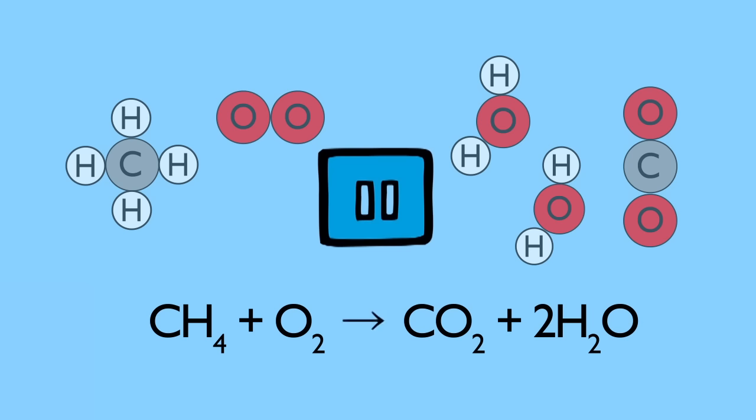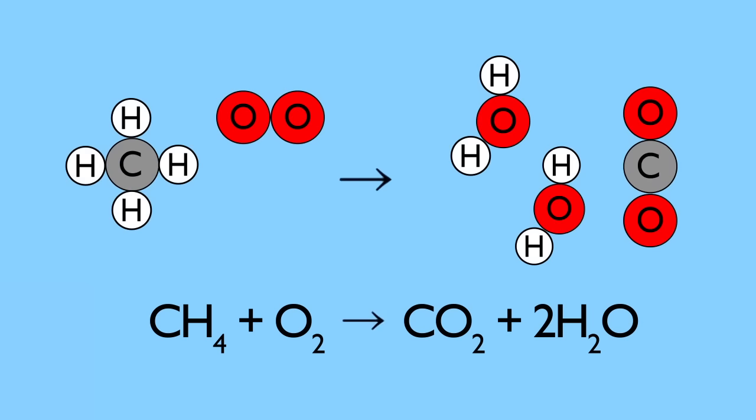Pause and count. Is it balanced now? Well, the carbon and the hydrogen balance, but we have four oxygens in the product but only two in the reactants. So we add another oxygen molecule to the reactants. Now we have conserved mass.